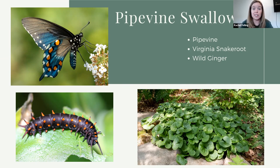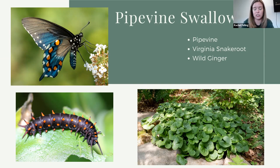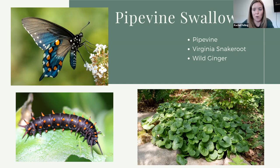The pipevine swallowtail will also host on wild snakeroot, and wild ginger — which is actually fairly easy to cultivate and is a great ground cover in a shady area. Wild ginger is a great option if you're looking for something to fill in a shady area. I have some growing along the side of my house in a little area that doesn't get any sun. So wild ginger is a great option, and you're potentially hosting your pipevine swallowtail, which is a beautiful butterfly.